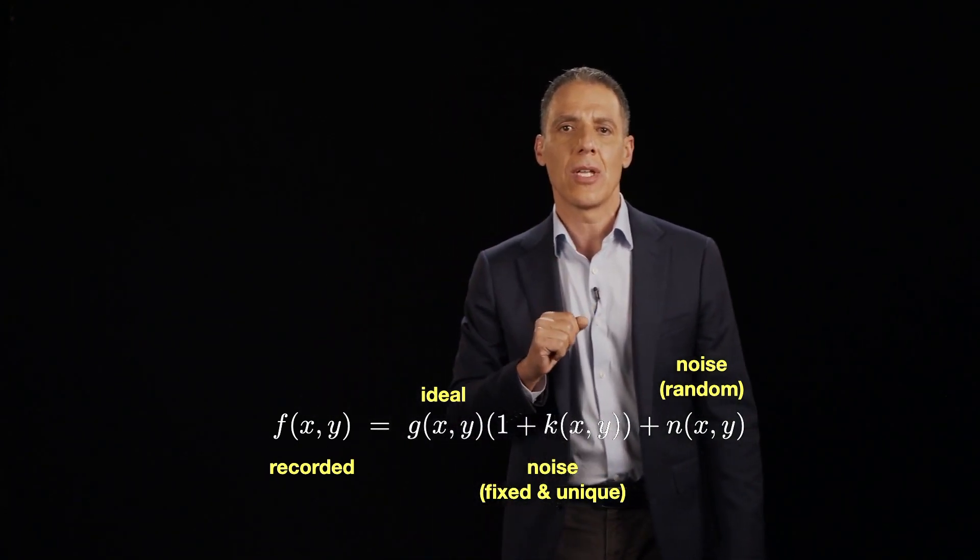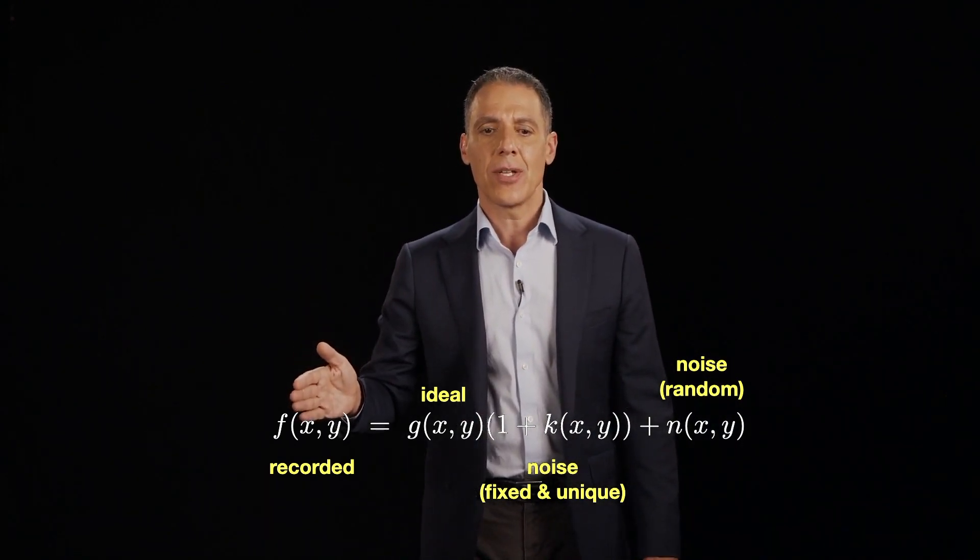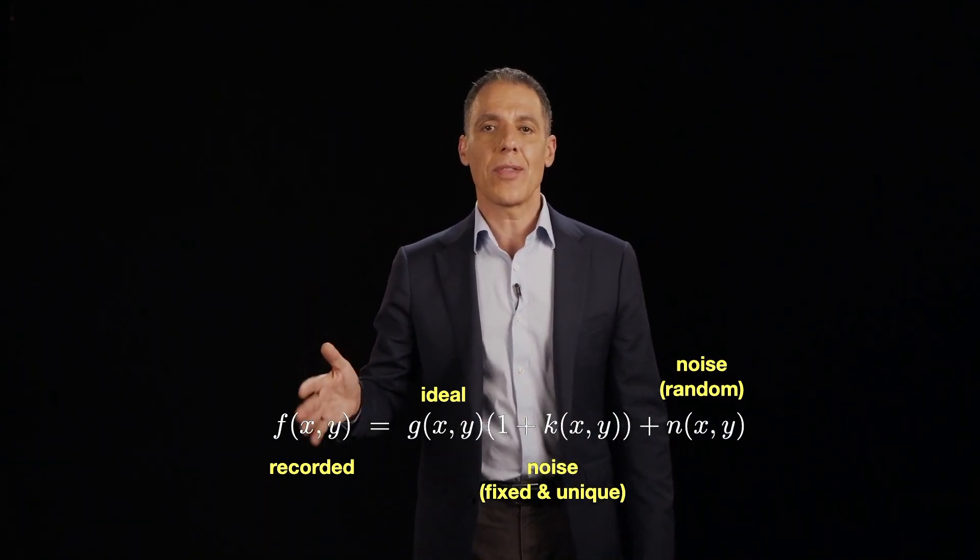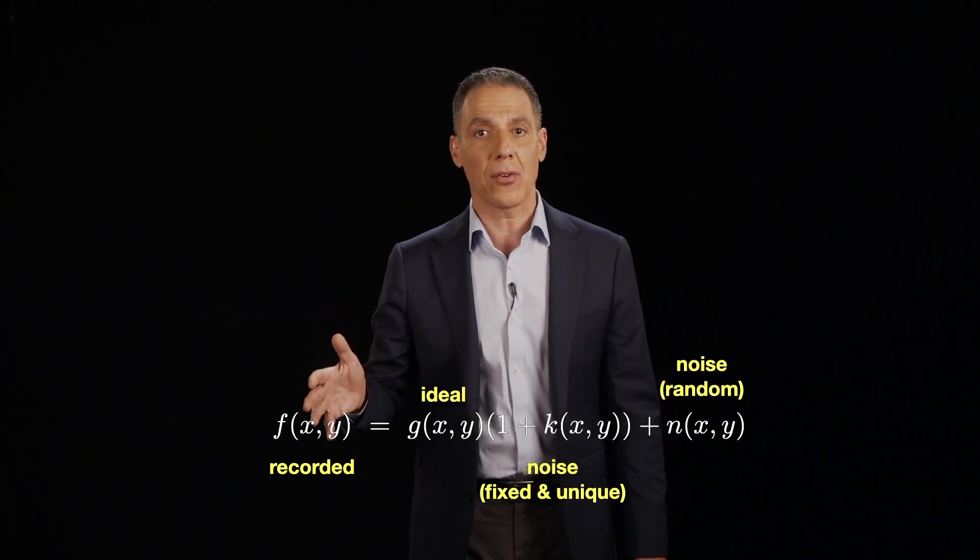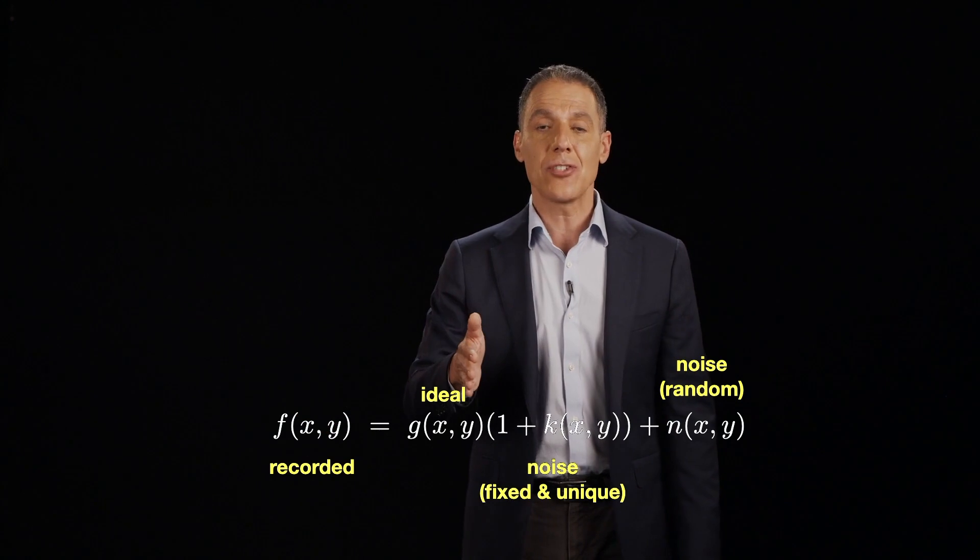So here on this side, I'm going to represent an image as f(x,y). So f is the intensity value, x, y is the horizontal and vertical axes, columns and rows of each pixel. And let's ignore color for now. We'll treat this as a single channel image.